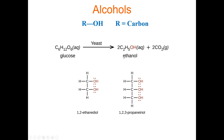This specific alcohol — the one in beer and any alcoholic beverage — is called ethanol. Of course, there are more alcohols than just ethanol. Here's ethane diol, which has two OH groups. Here's 1,2,3-propane triol, which has three OH groups. So anytime there's an OH group stuck to a carbon, we call that an alcohol.